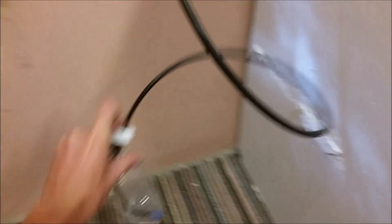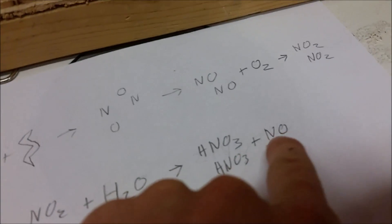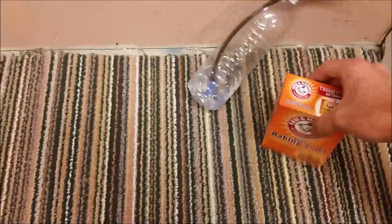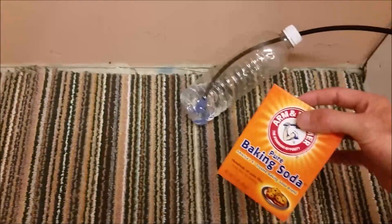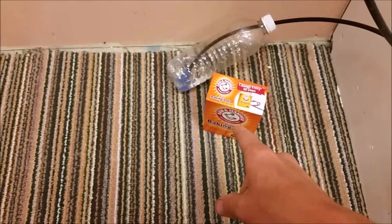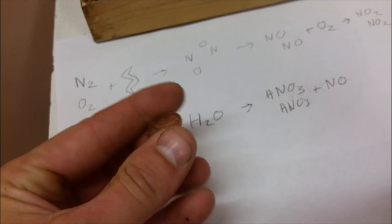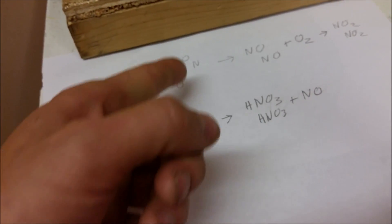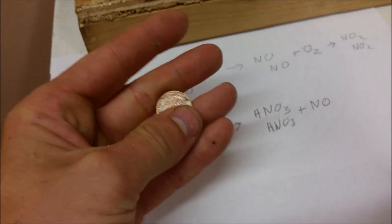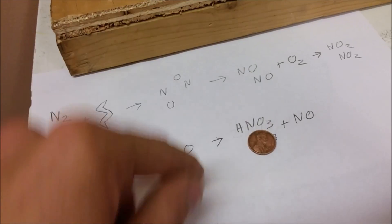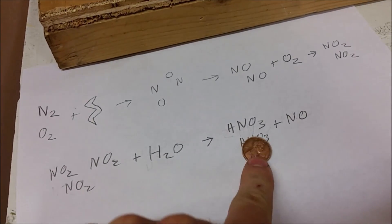The process won't be a hundred percent efficient because of course this nitrogen monoxide species escapes, but it should be enough that I'll be able to tell if it works at all. If I am able to make nitric acid, I should be able to tell by adding some baking soda to the water. If nitric acid is present, it will react with the sodium bicarbonate forming sodium nitrate and CO2, which will bubble out of solution as my indicator. Also, just in case the water is acidified without forming nitric acid — say maybe this makes ozone or some weird acid — I'm going to add this penny to the solution as well. If the penny dissolves, I'll know it is in fact nitric acid, because nitric acid is one of the very few acids that can dissolve copper.